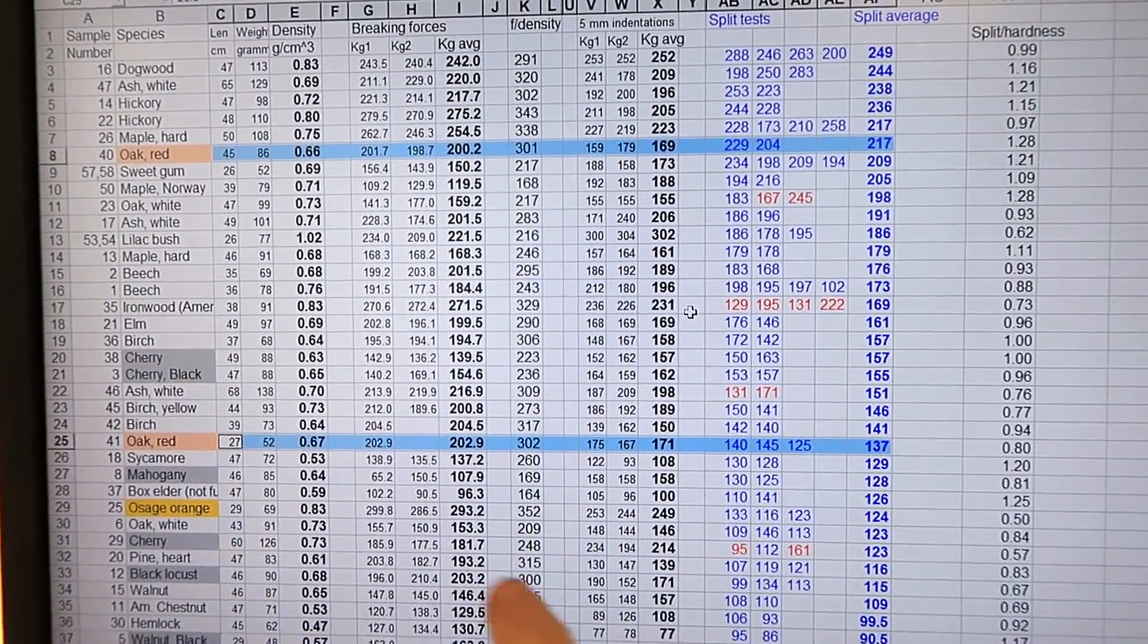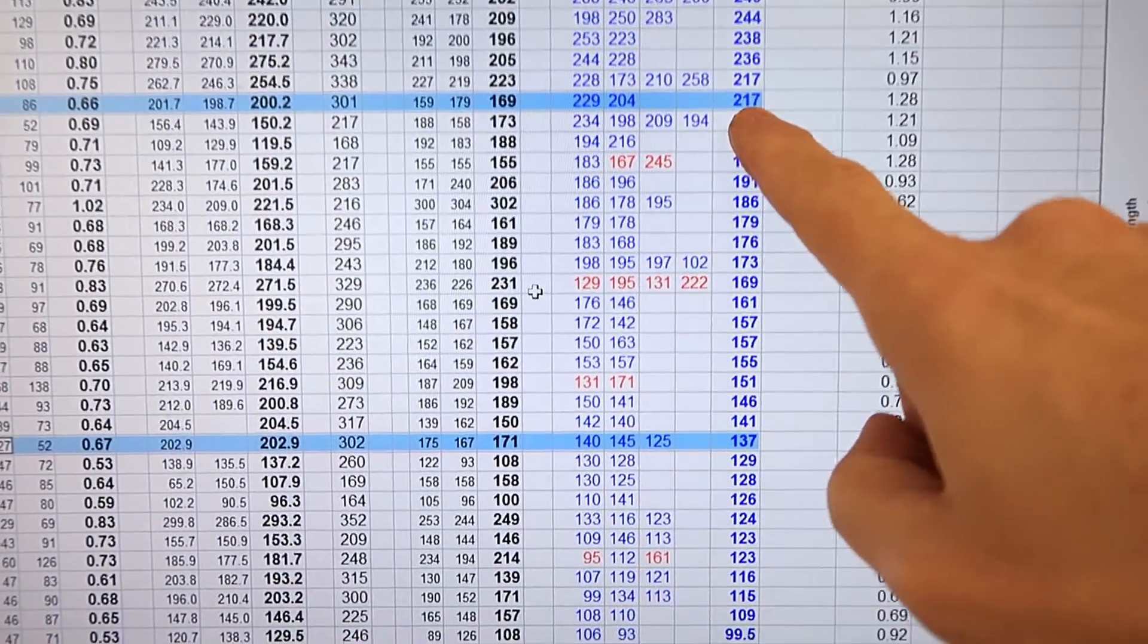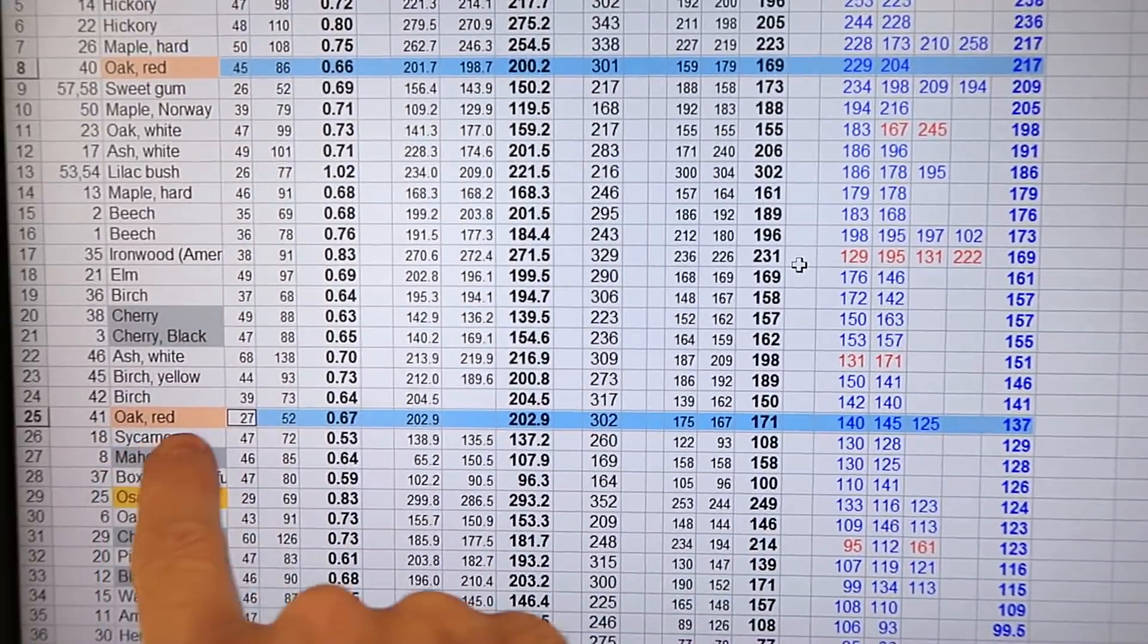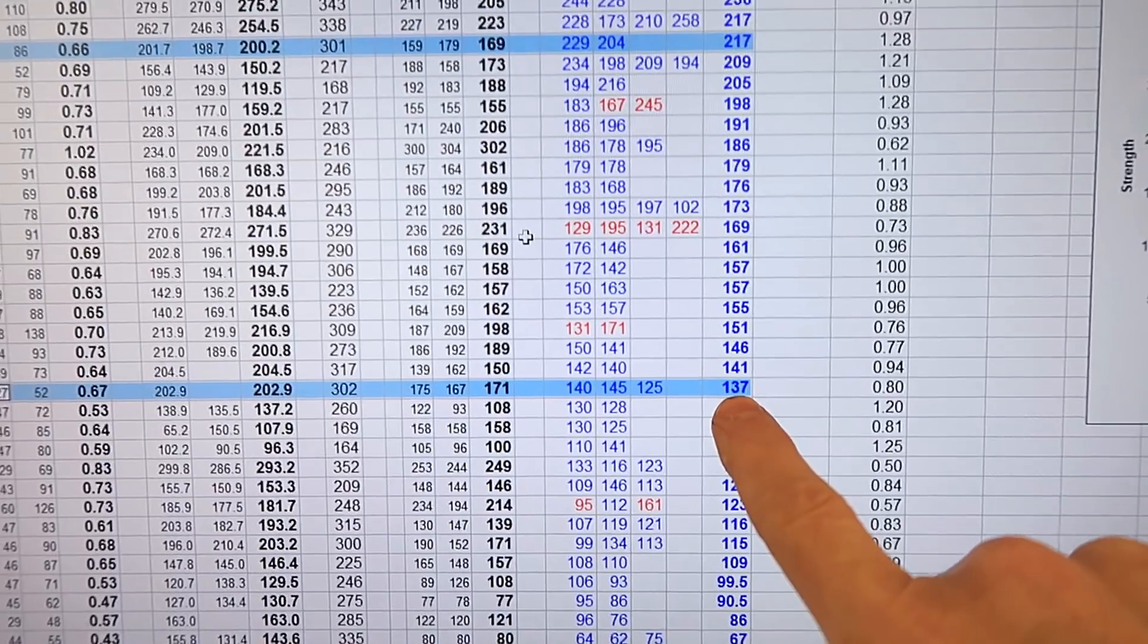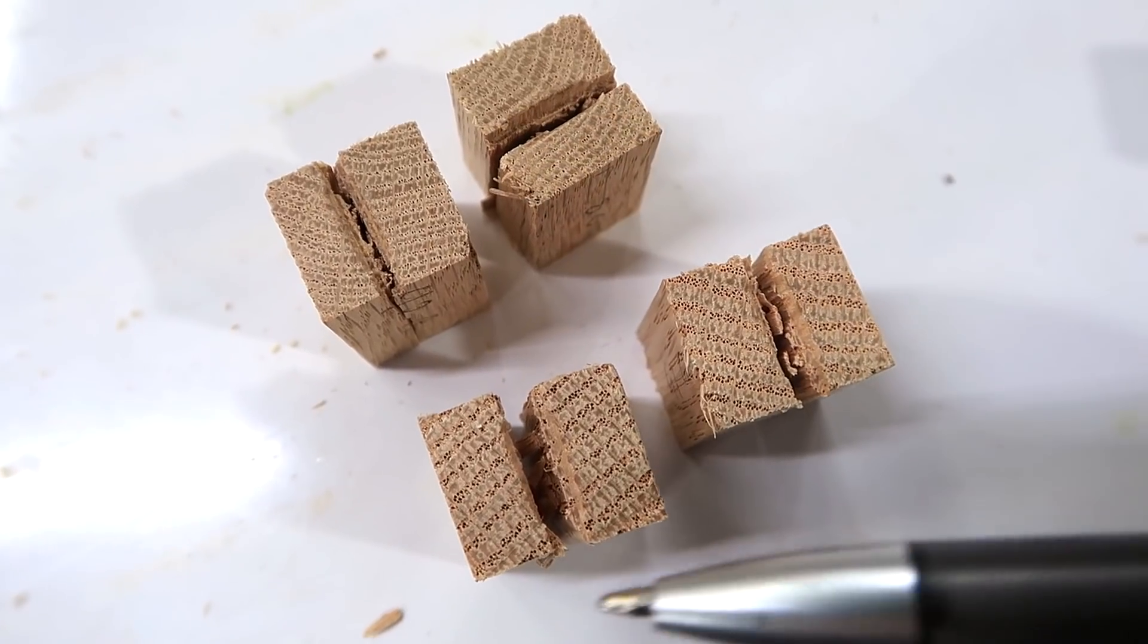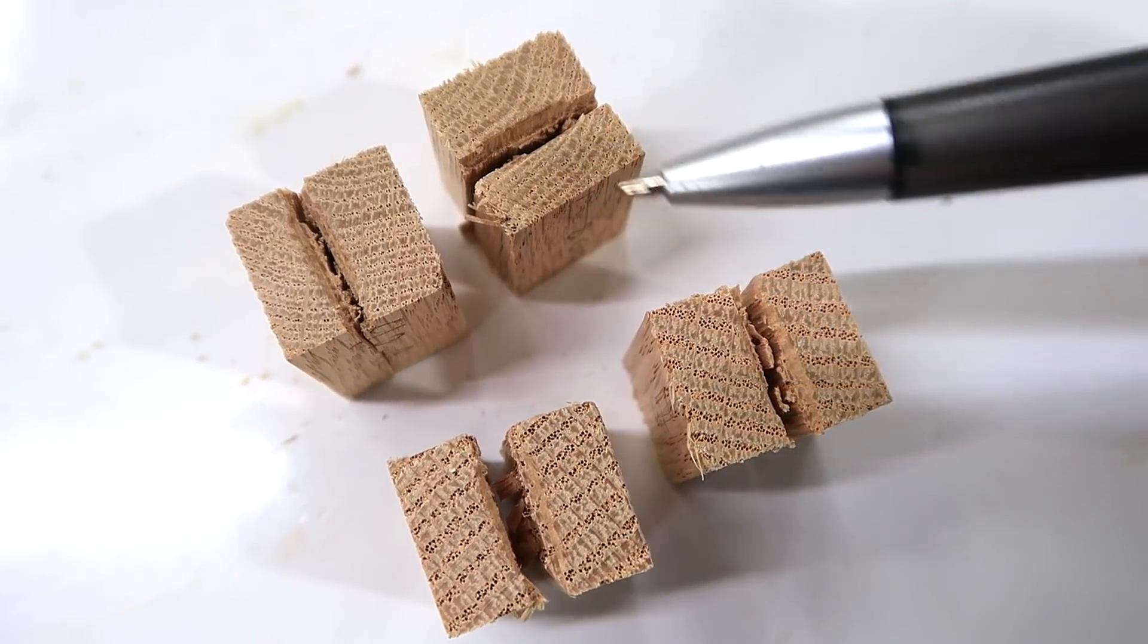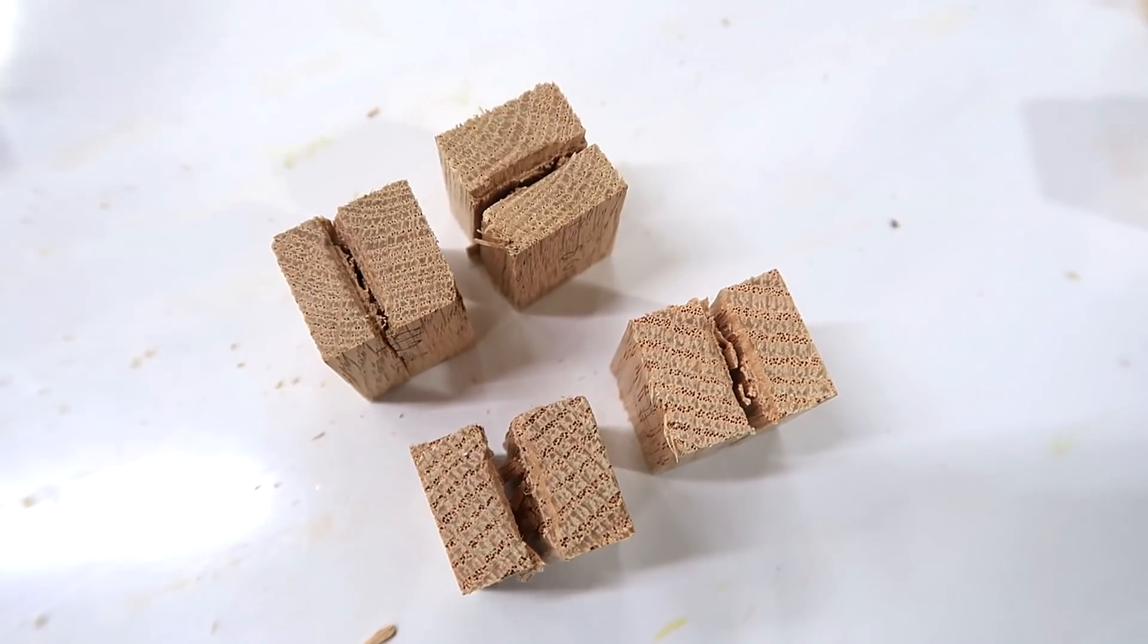But then there are other inconsistencies so this red oak sample was consistent with itself at 217 and this other red oak sample down here averaged 137. Going back to my samples these were the hard to split ones and these were the easy to split ones. You can see the grain density is quite different between the two of them even though they're the same species.